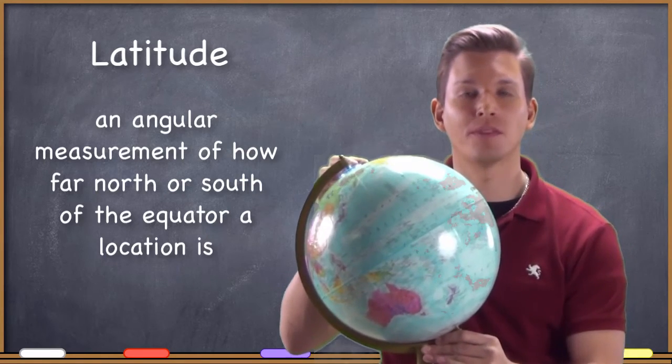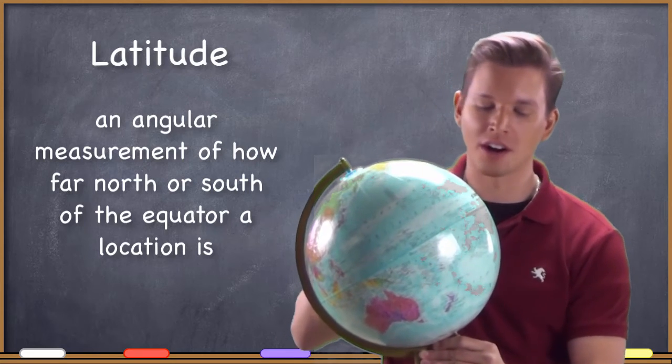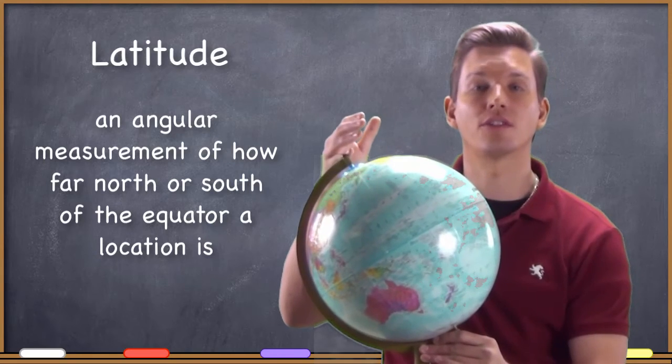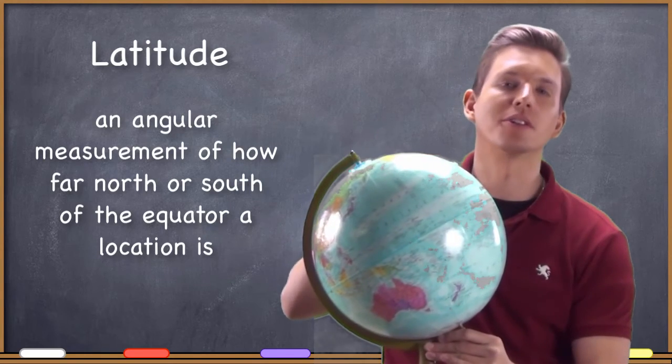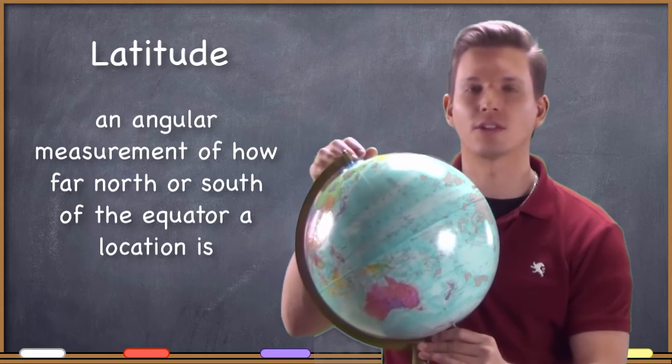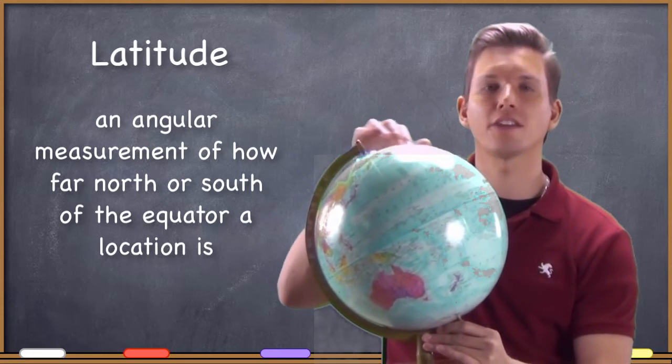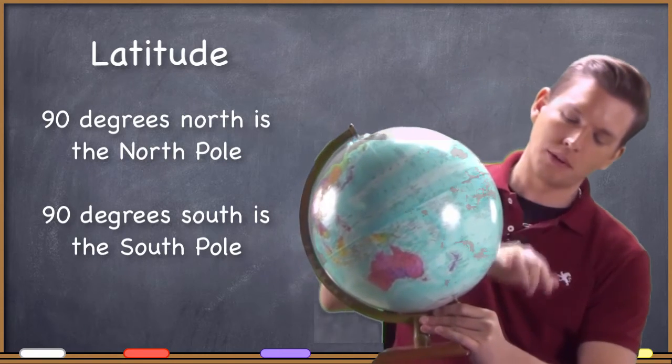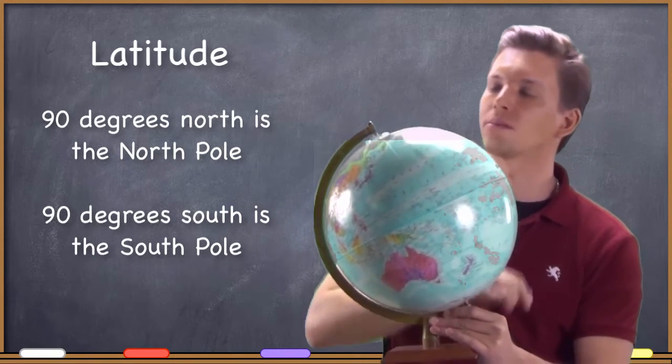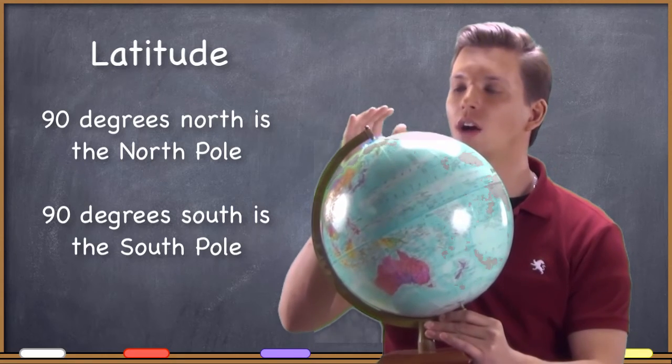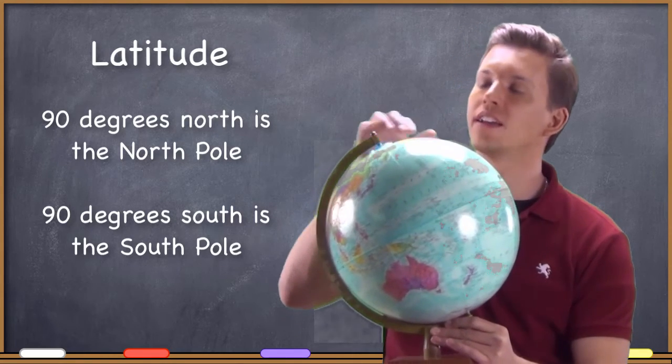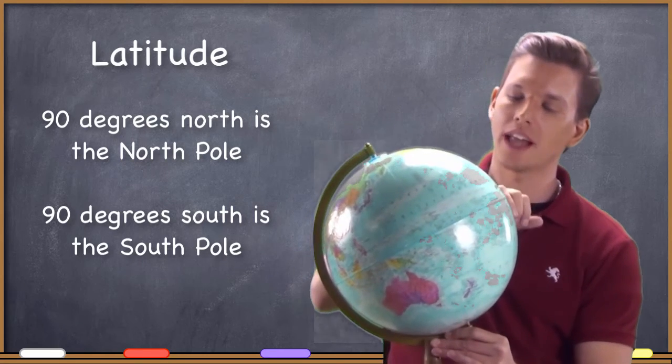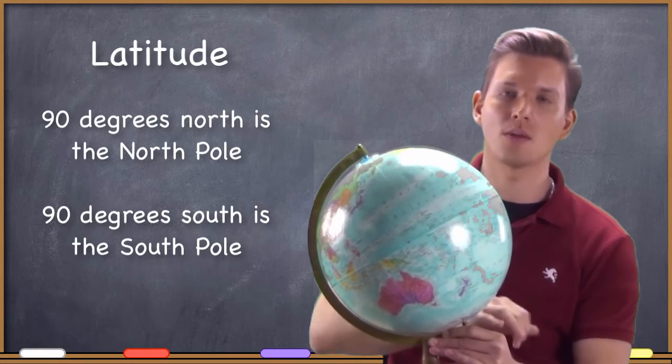Please remember what the maximum values for latitude and longitude are. I always ask my class, so what happens when you get to 110 degrees north? Oh, well, of course, that's a trick question because there is no 110 degrees north. Keep in mind that the highest latitude you can get to is 90 degrees. So we have 90 degrees north and then we also have 90 degrees south at the south pole. We'll talk about why exactly that is. We'll talk about why 90 degrees is your highest latitude in a moment. So latitude is going to measure north and south of the equator.